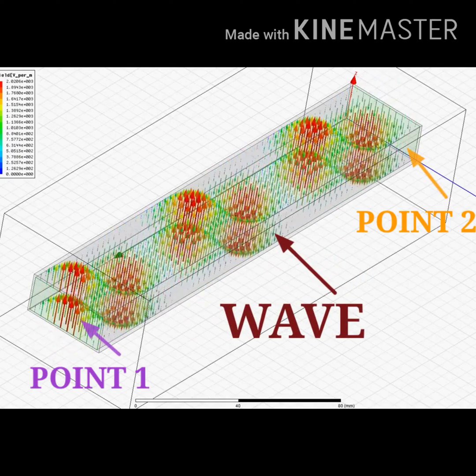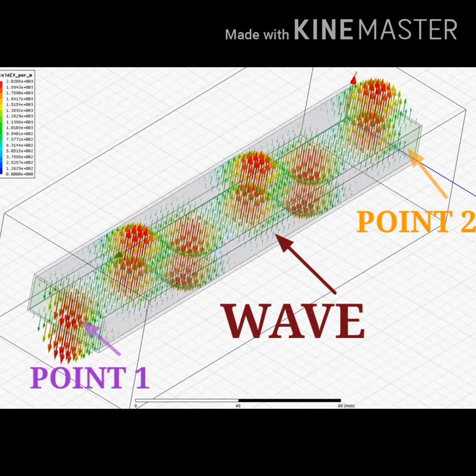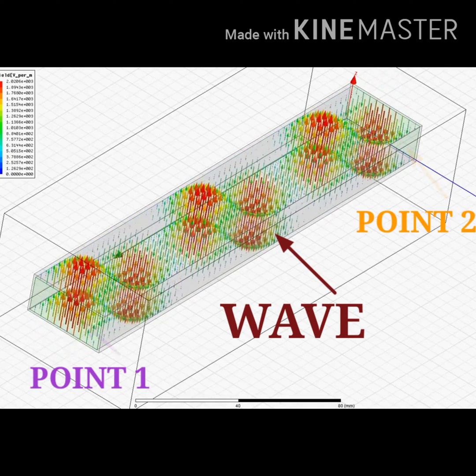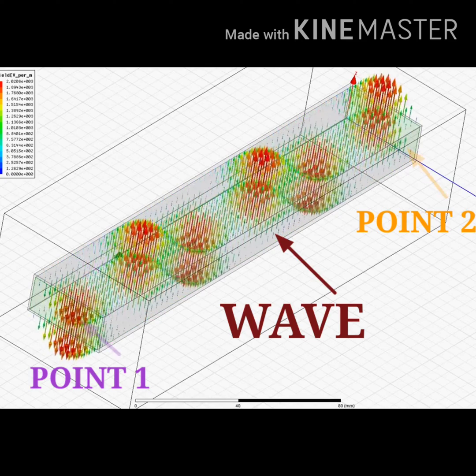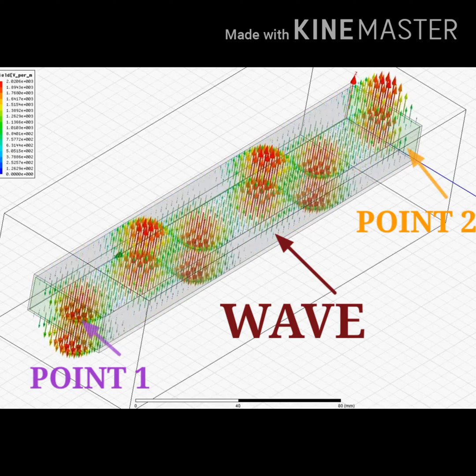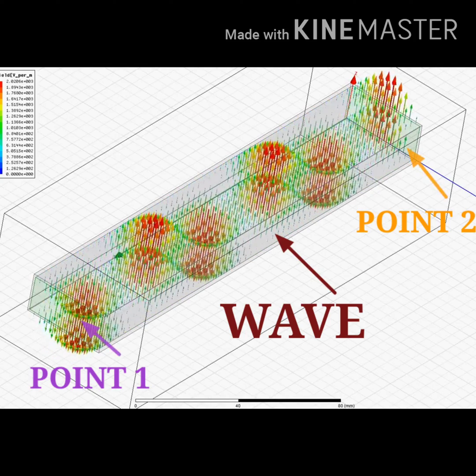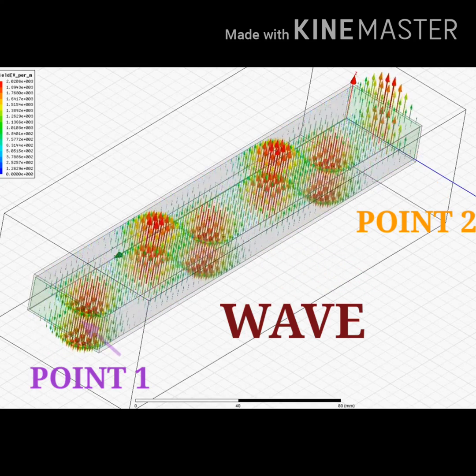To define what wave guides are: wave guides are structures that propagate electromagnetic waves from point to point, within which the fields are confined or restricted to a certain extent. When we see that waves travel from point to point, the transmission line also perfectly fits this definition.